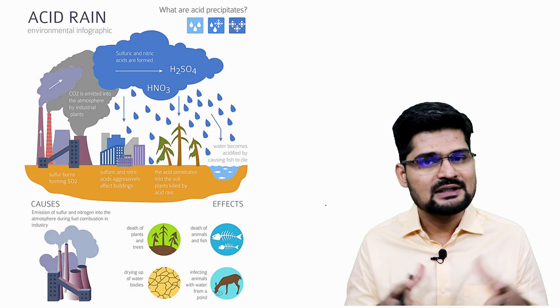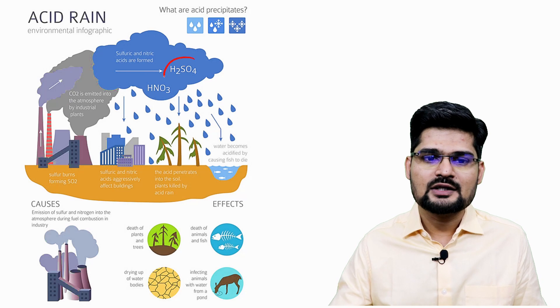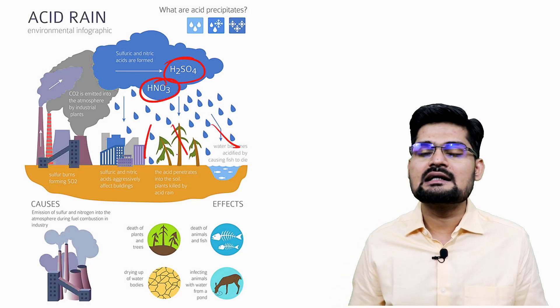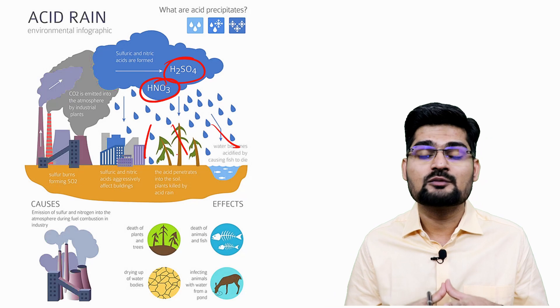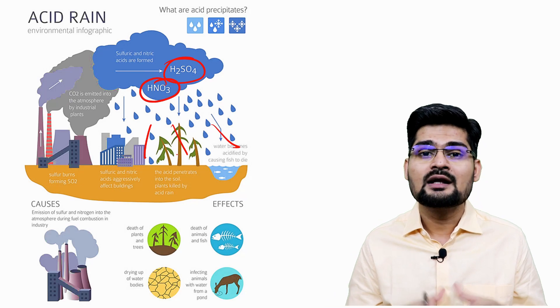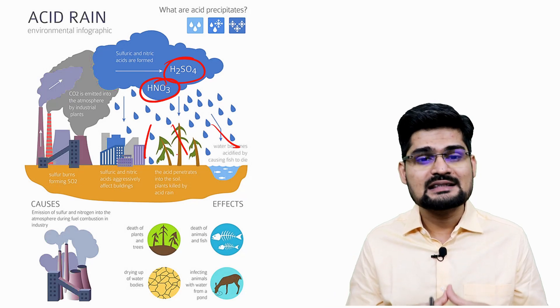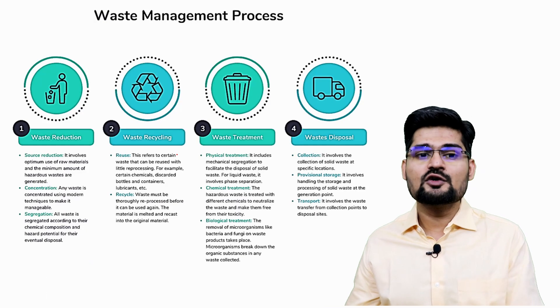Acid rain is a very important phenomenon also discussed in environmental geography. Remember H₂SO₄ and HNO₃ forming in certain areas, leading to a lot of loss of life and property, as well as loss of forest areas and greenery.